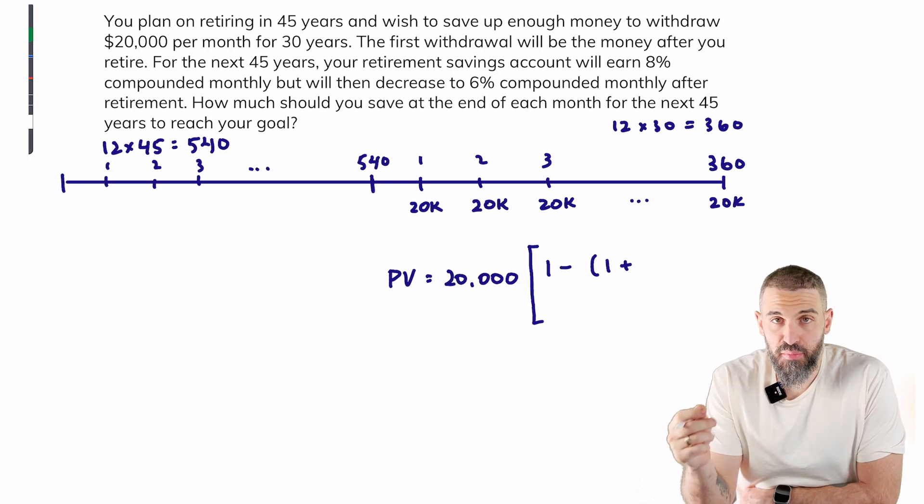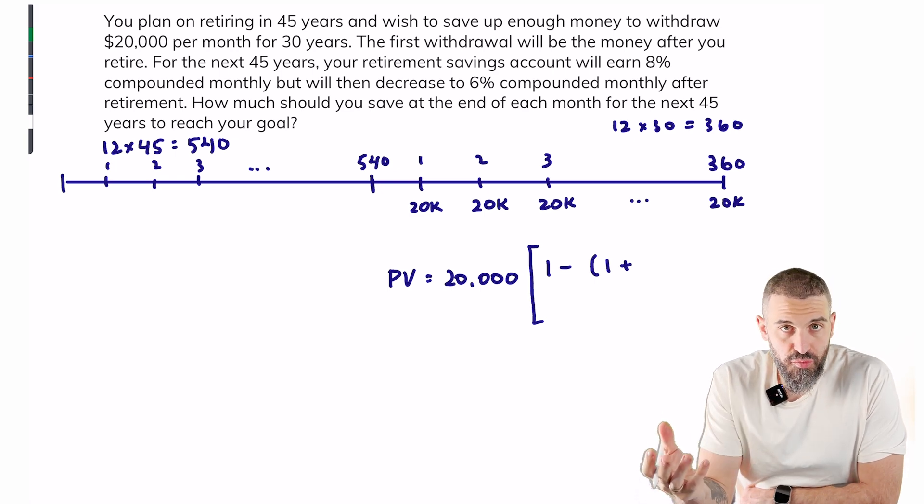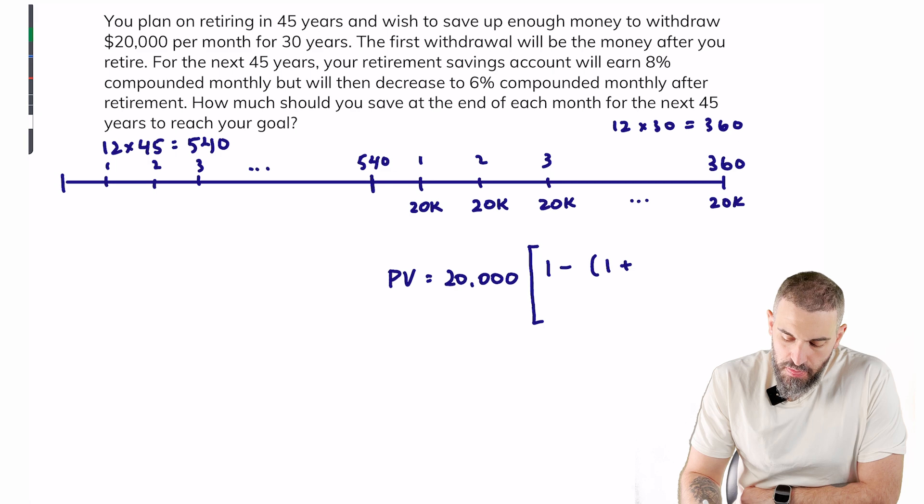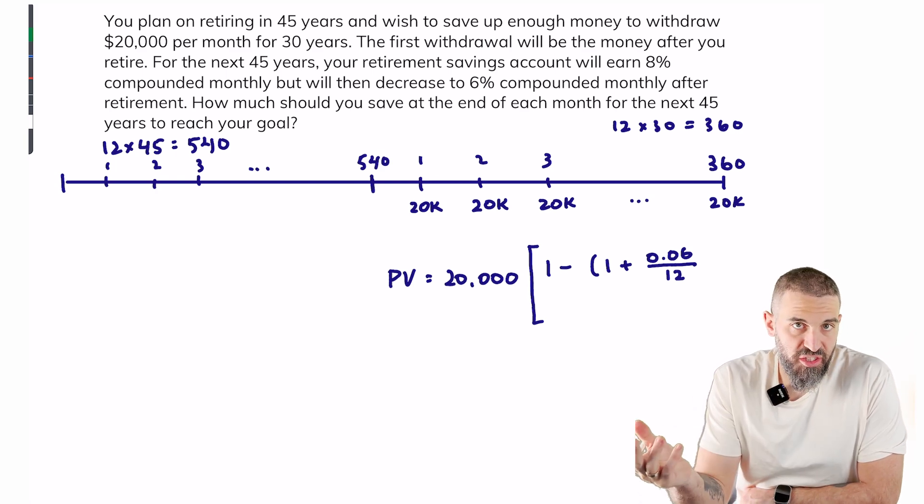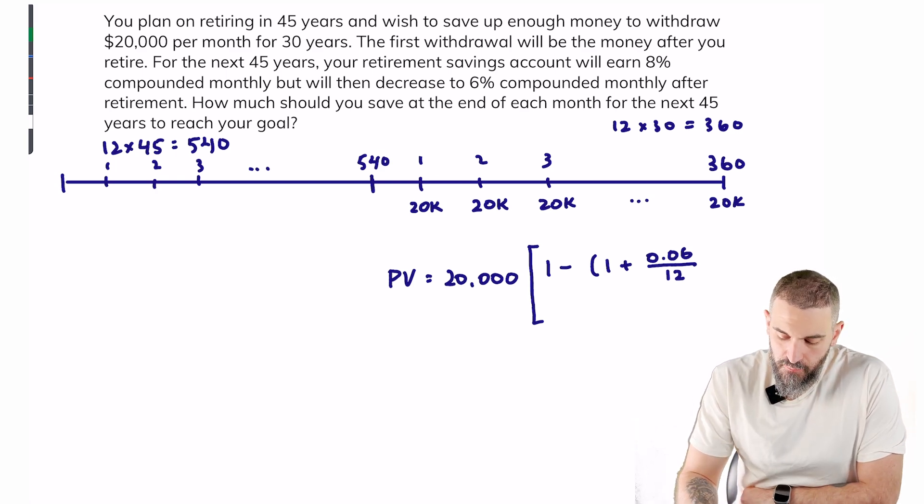Now my rate is 6% compounded monthly. My payments are also monthly, so I'm simply going to divide my rate here by 12 to turn it into a monthly rate. I'll put that to the power negative 360, all that over once again the rate 0.06 divided by 12.